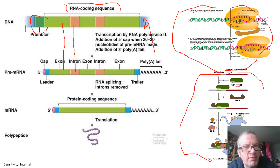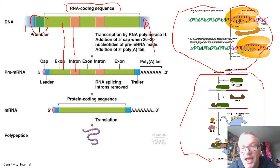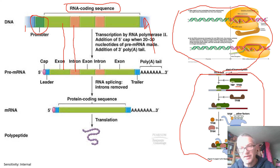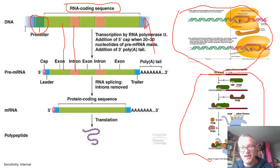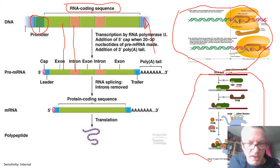We talked a lot about these promoter regions and how they start the process. The actual elongation process is very similar to the elongation process in DNA replication, and there was a slide in the lecture that described this. This time the dNTPs have a uracil in their group as opposed to thymine.